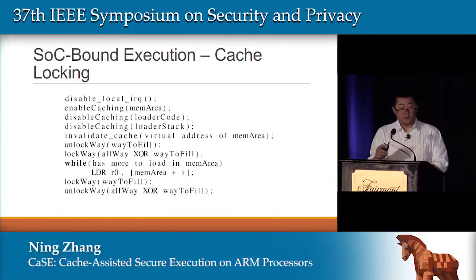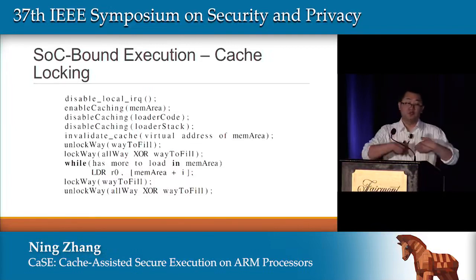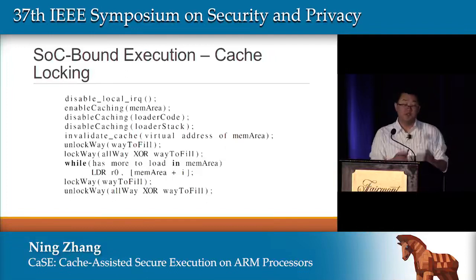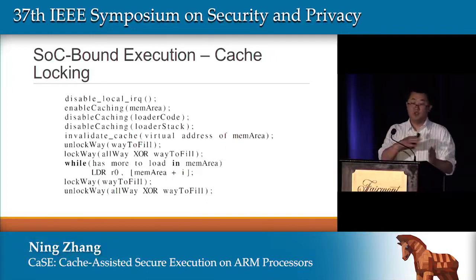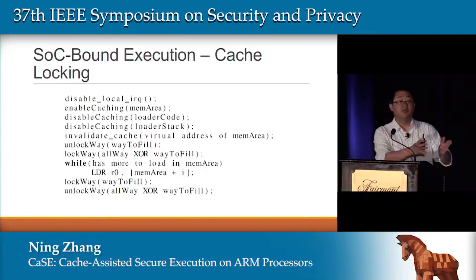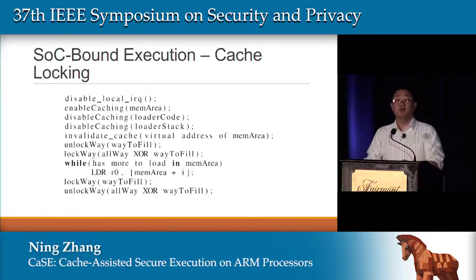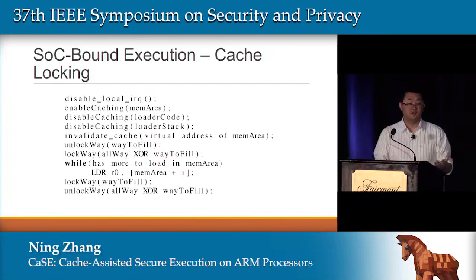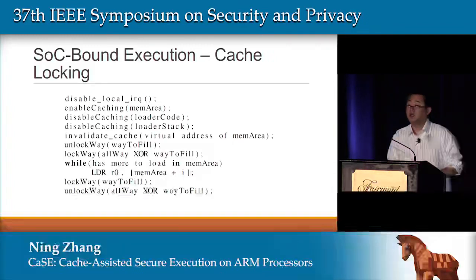Then we toggle the switch so all cache goes to the designated locked way. We iteratively load the memory, causing cache fills on the memory area. Once the memory area is fully filled in the cache — meaning there's a cache line for each memory address we'll use for the application space — we lock the cache.